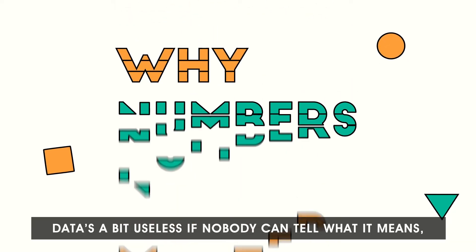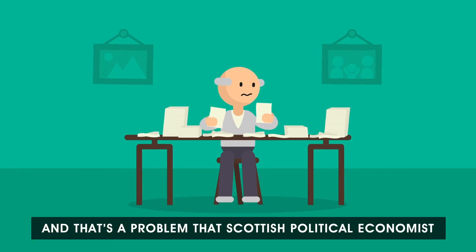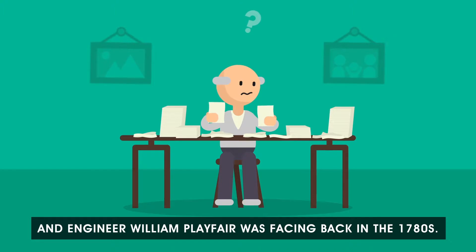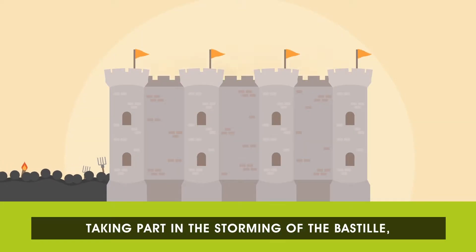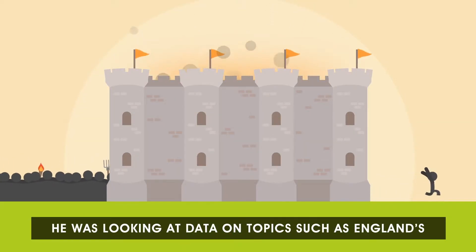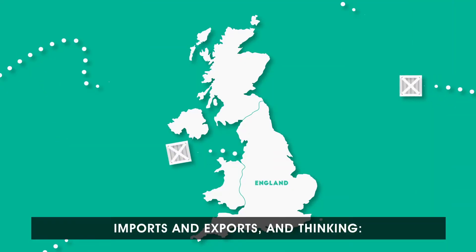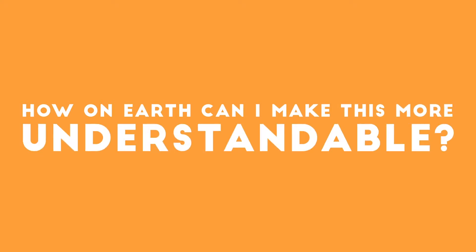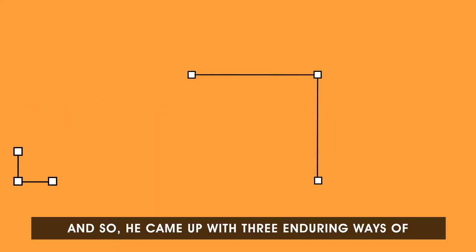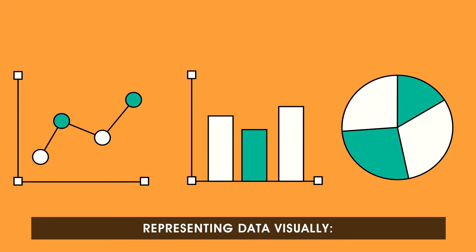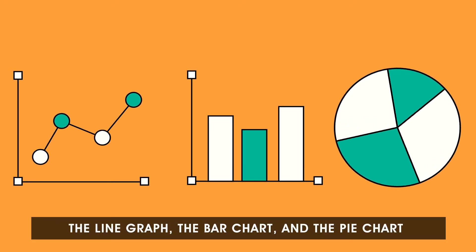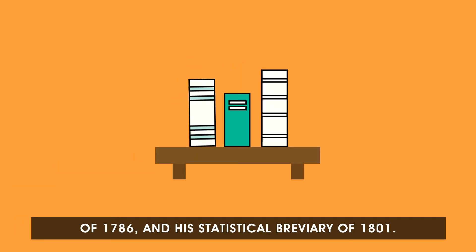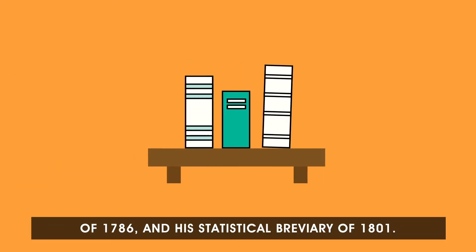Data's a bit useless if nobody can tell what it means, and that's a problem that Scottish political economist and engineer William Playfair was facing back in the 1780s. When he wasn't busy engineering or taking part in the storming of the Bastille, he was looking at data on topics such as England's imports and exports, thinking how on earth can I make this more understandable? He came up with three enduring ways of representing data visually: the line graph, the bar chart, and the pie chart. These first appeared in his Commercial and Political Atlas of 1786, and his Statistical Breviary of 1801.